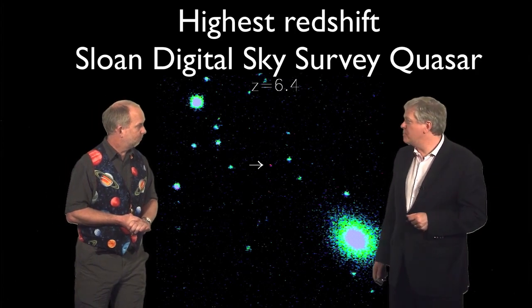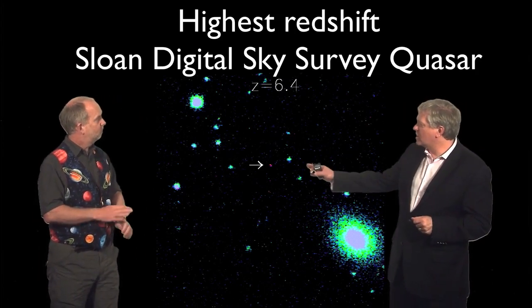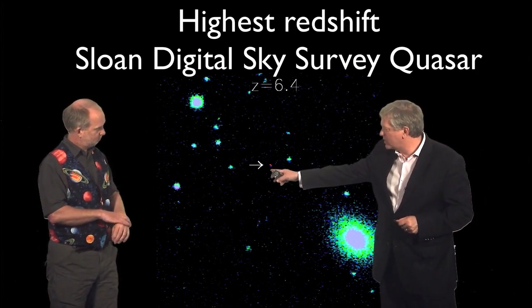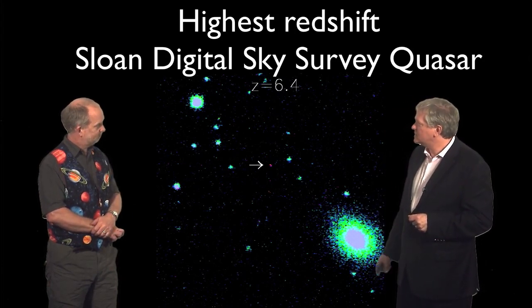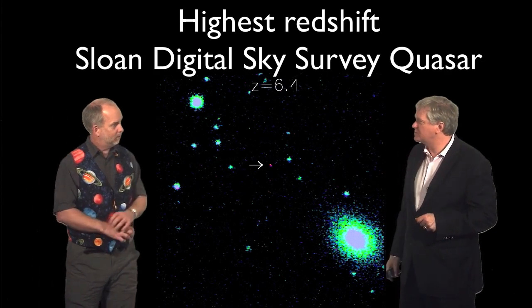So I guess this is their biggest or most distant object they saw, this tiny little red smudge right in the center. It doesn't look like much, but it's at a redshift of 6.4. That's a long ways back.